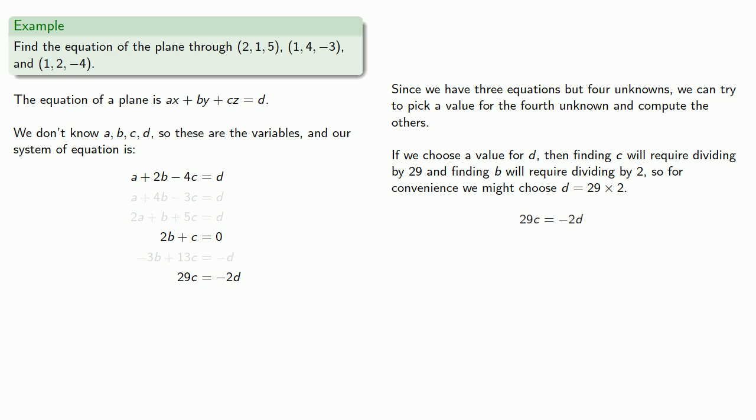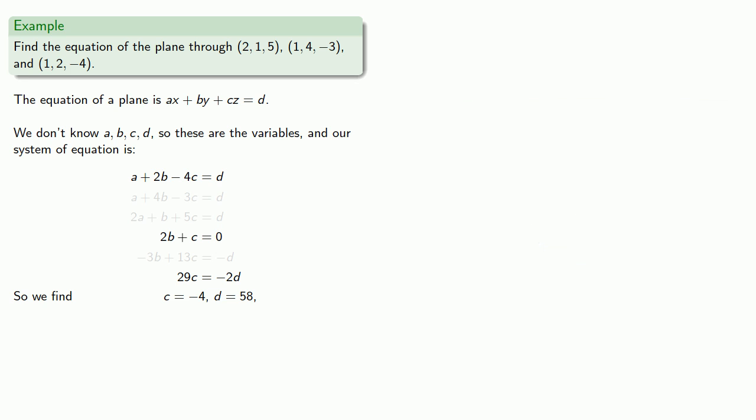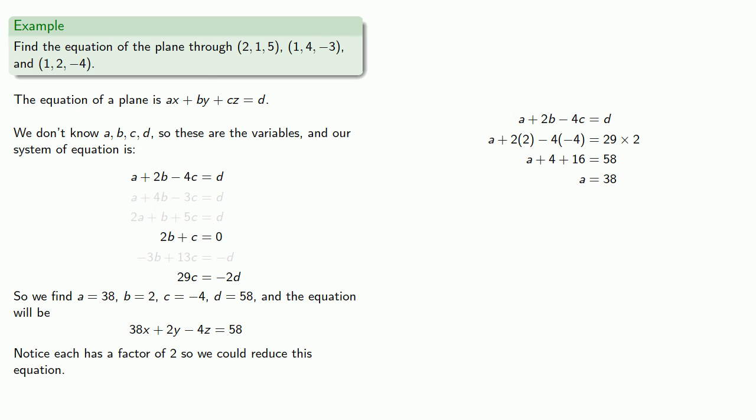So if d is 29 times 2, then our last equation becomes, and we solve. And so that gives us d equals 29 times 2, 58, and c equals negative 4. So now that I know c and d, we can substitute into our third equation and get and solve. And now that we know b, c, and d, we can substitute into our first equation and get our value for a, b, c, and d. And so our equation will be, and you might notice that each coefficient has a factor of 2, so we could reduce this equation, but we won't bother.